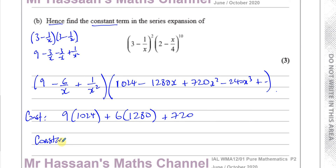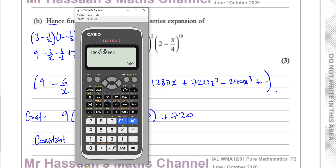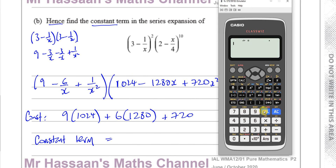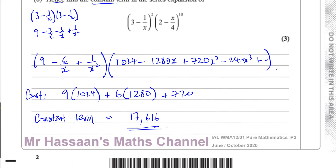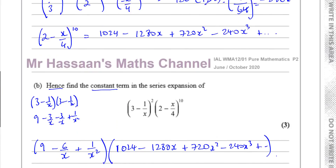So the constant term is 9 × 1024 + 6 × 1280 + 720 = 9216 + 7680 + 720 = 17,616. That is the constant term in the expansion.